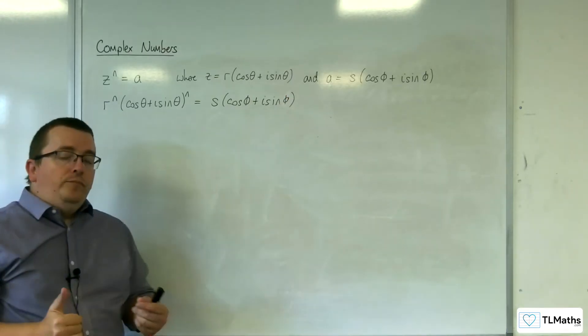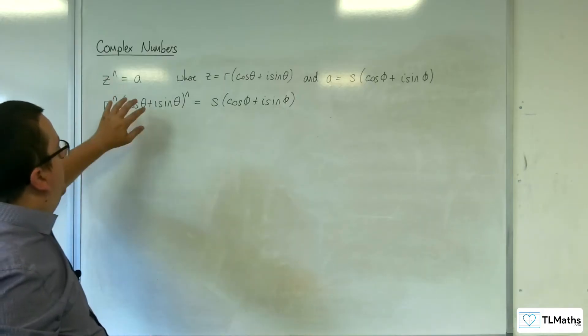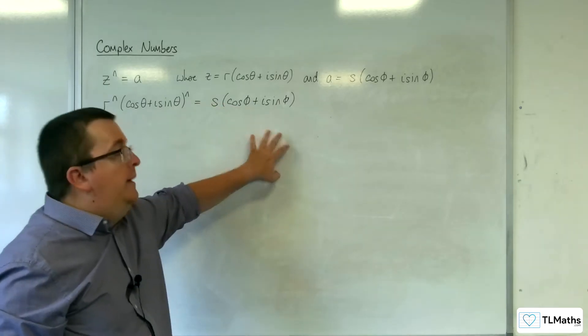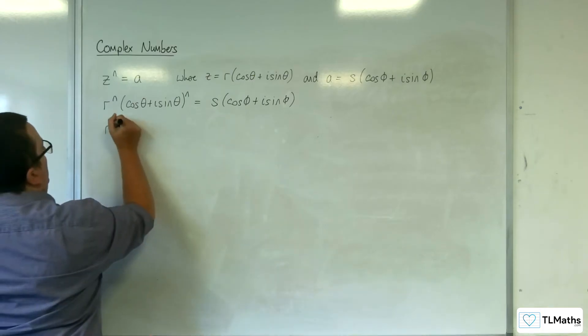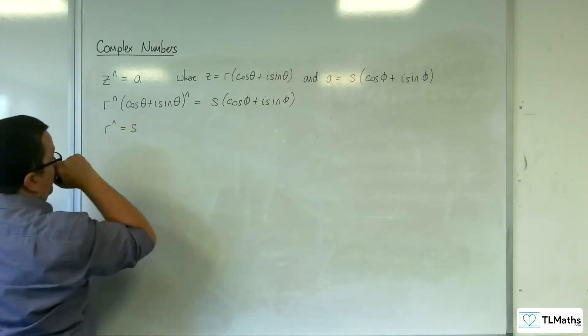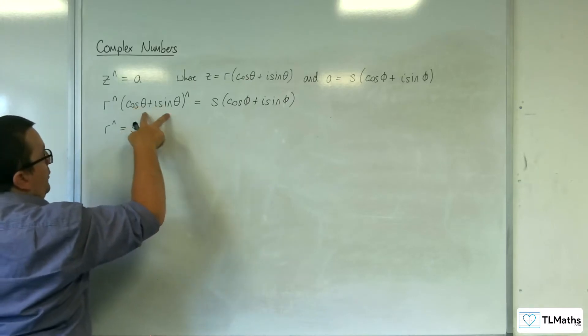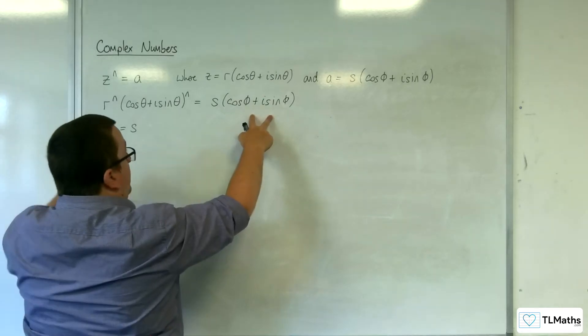Now, in order for the magnitude of the left-hand side to be equal to the magnitude of the right-hand side, that must mean that r to the n must be equal to s. So r to the n must be equal to s, and the cosine theta plus i sine theta to the n must be equal to cosine phi plus i sine phi.